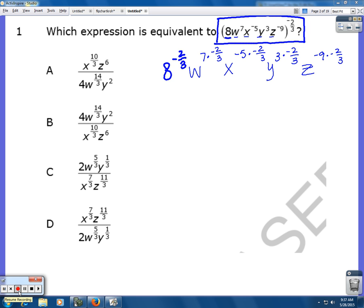So in my calculator, if I raise 8 to the negative 2 thirds, it's going to end up giving me 0.25, and I know that 0.25 is 1 over 4.